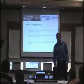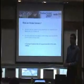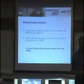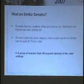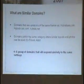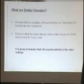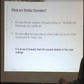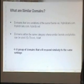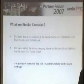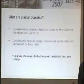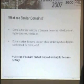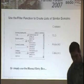What do we mean by similar domains? A lot of domainers follow a strategy of locking up a niche — for example, hybrid cars — and register 50 names in a category where similar layouts and photos can be used: travel, adults, gambling, whatever. The key factor is grouping your domains into groups that will respond similarly to the same settings, which helps you save time.